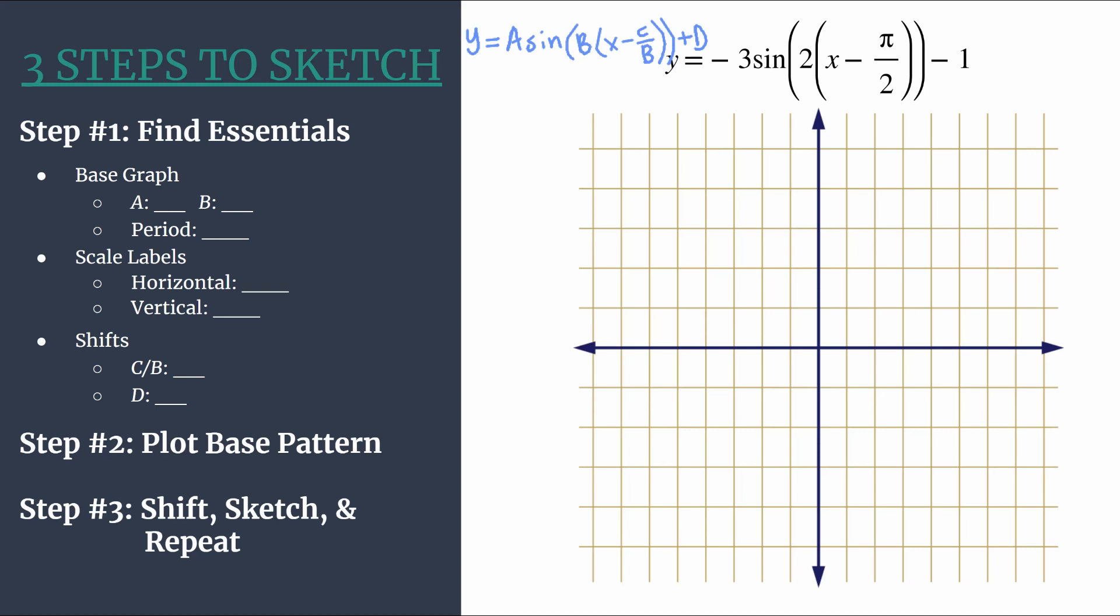All right, so now that we have this, we can work to organize all our information, so that we can get started on a nice graph. Step one is to find the essentials, and we'll work first on the base graph and labeling our axes, which we'll use in step two. So a is the coefficient in front of sine, so in this case a is negative three.